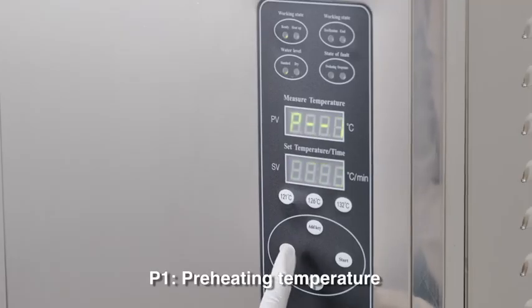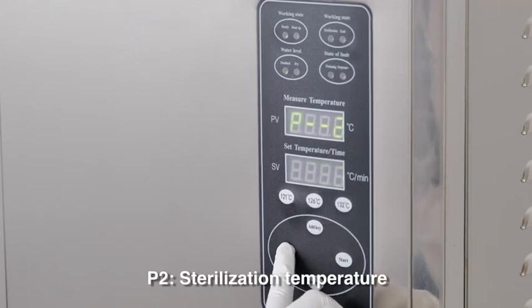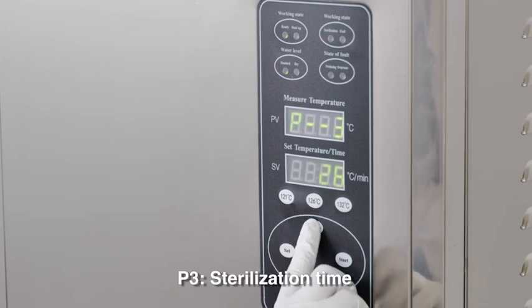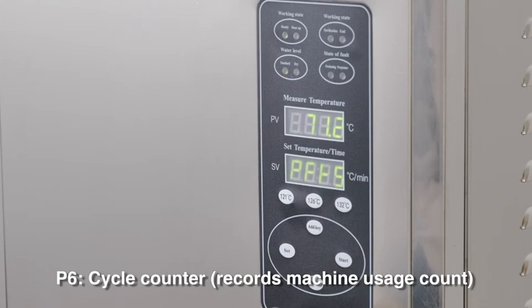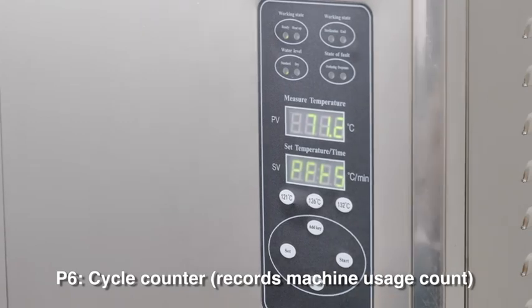P1 is preheating temperature, P2 is sterilization temperature, P3 is sterilization time, and P6 is cycle code to recall the machine usage codes.